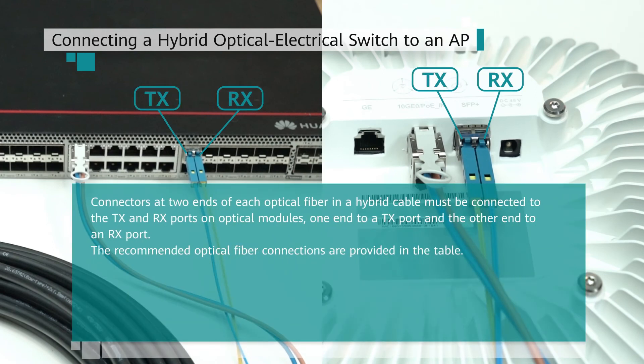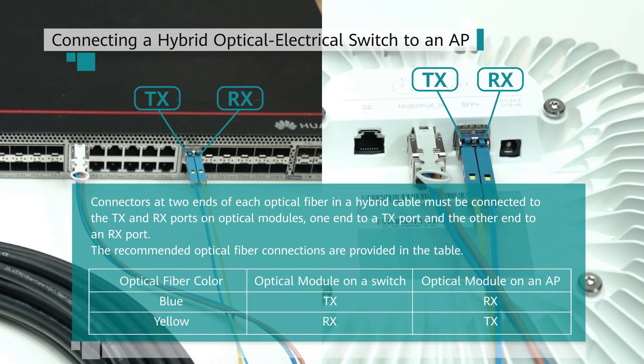Connectors at two ends of each optical fiber in a hybrid cable must be connected to the TX and RX ports on optical modules, one end to a TX port and the other end to an RX port. The recommended optical fiber connections are provided in the table.